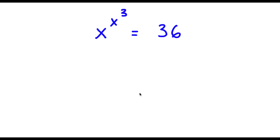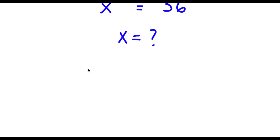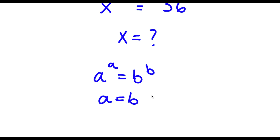So I have x to the power of x to the power of 3 is equal to 36, and I want to find the value of x. Before solving this problem, I'm going to teach you guys an important property of exponents. If I have something in the form a to the power of a is equal to b to the power of b, then a is equal to b — but this is only if x is greater than or equal to 1.